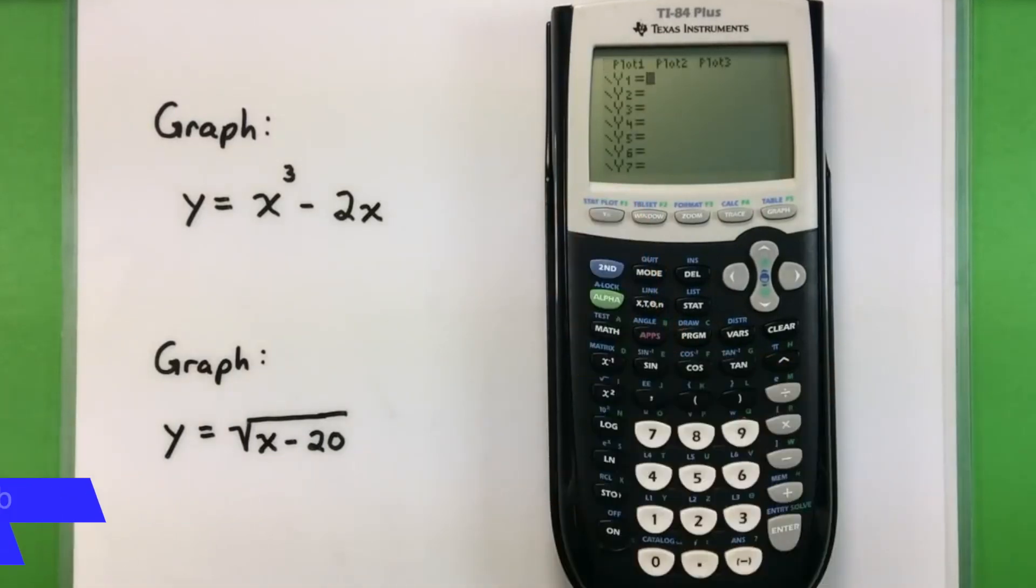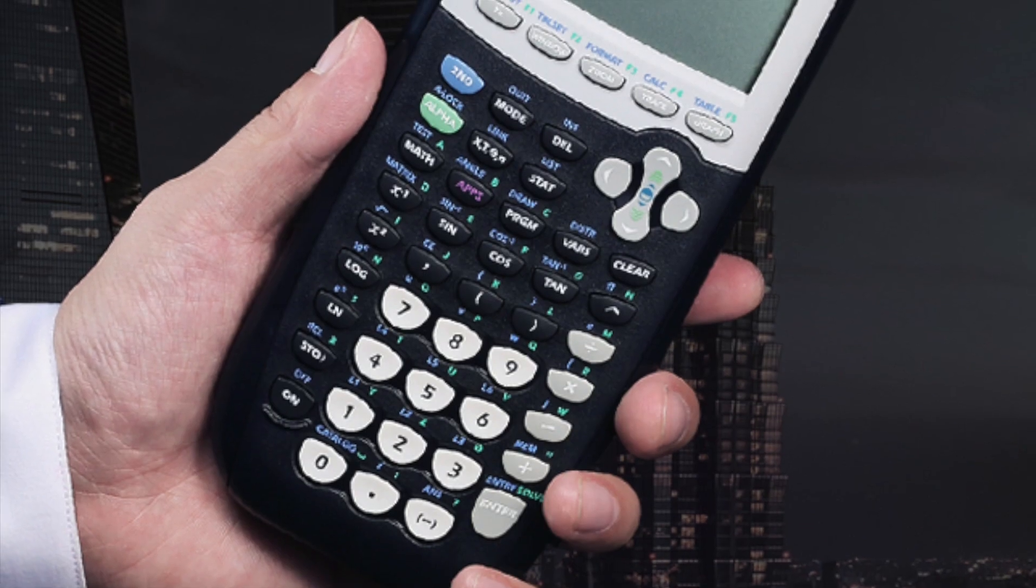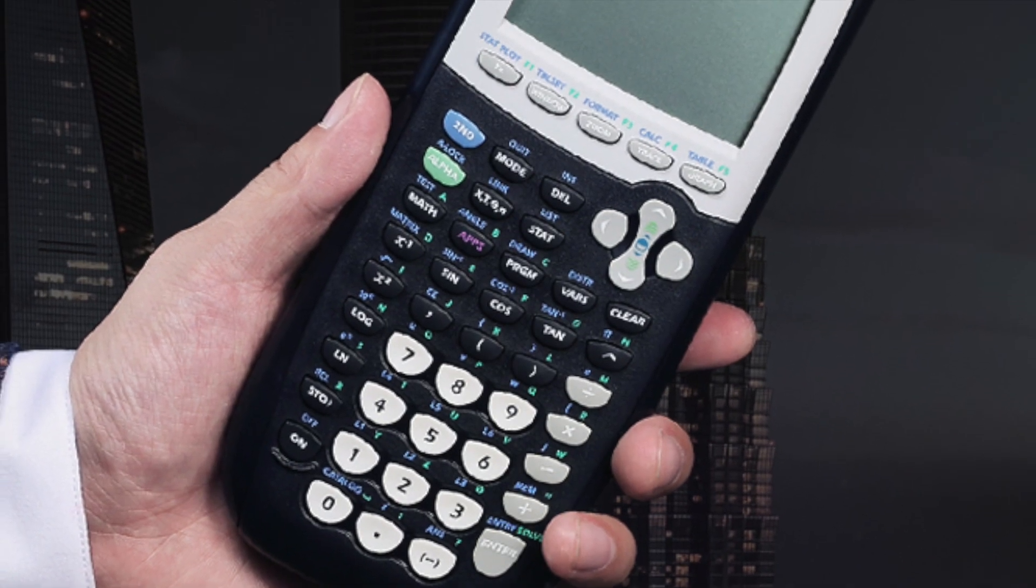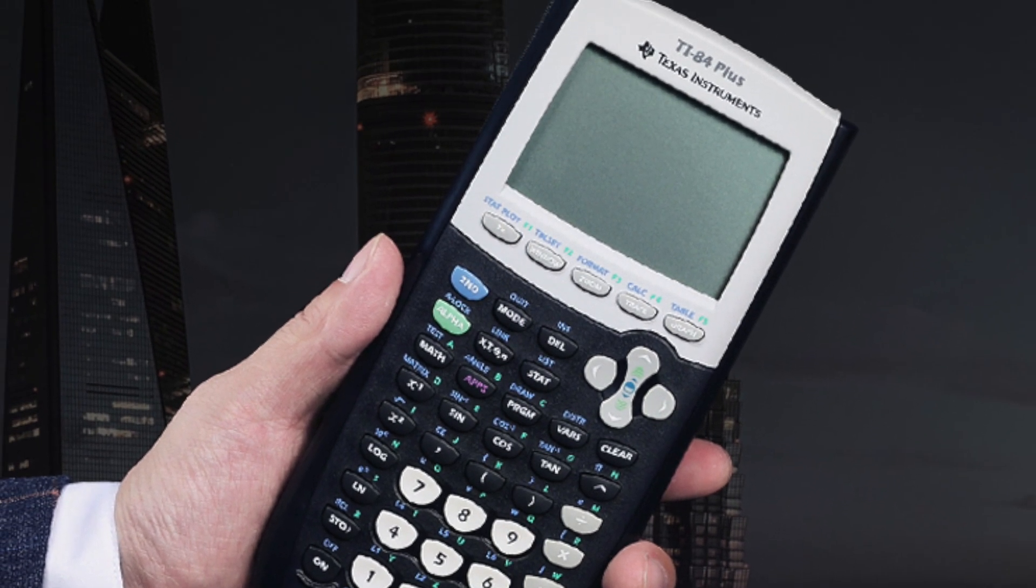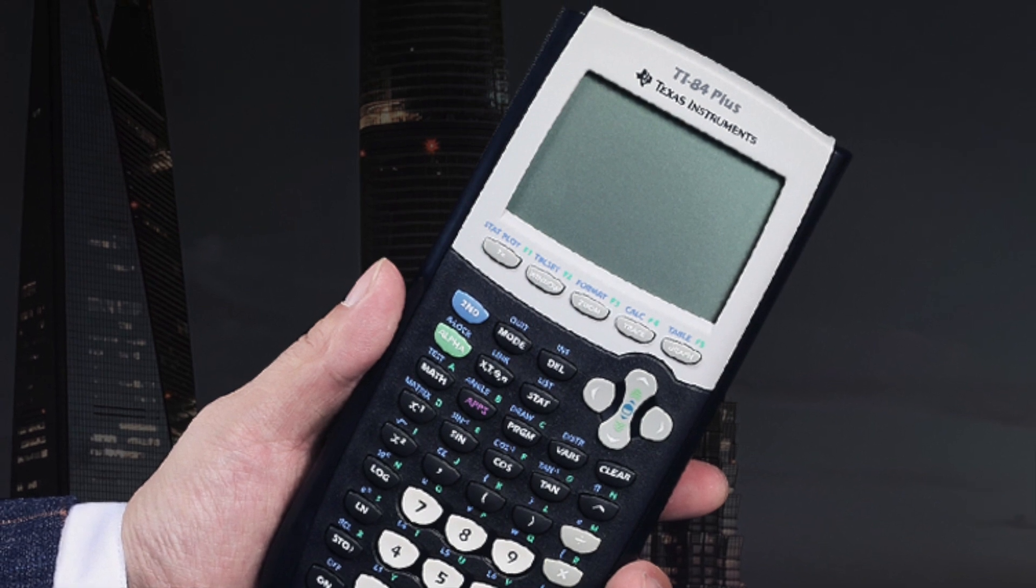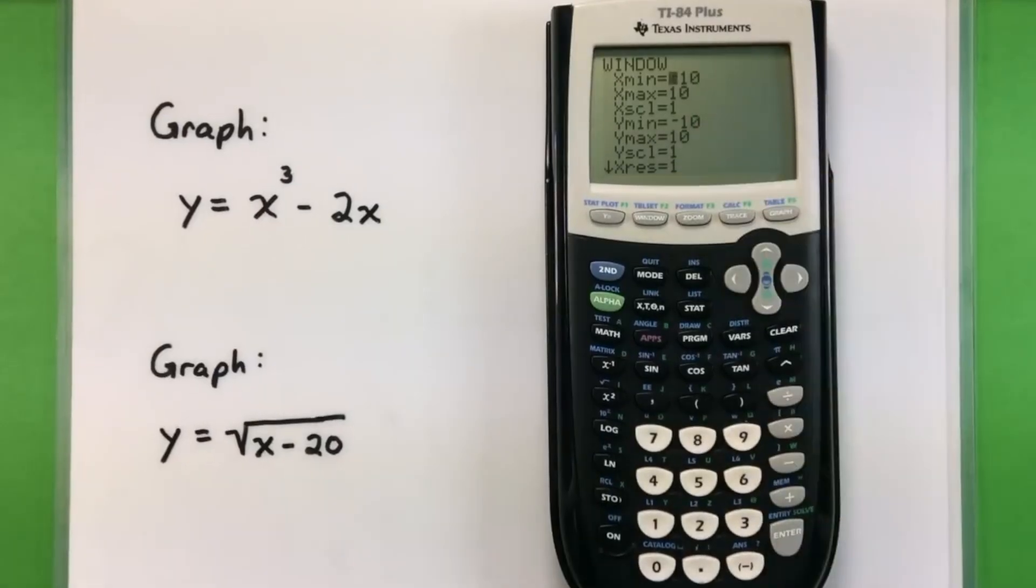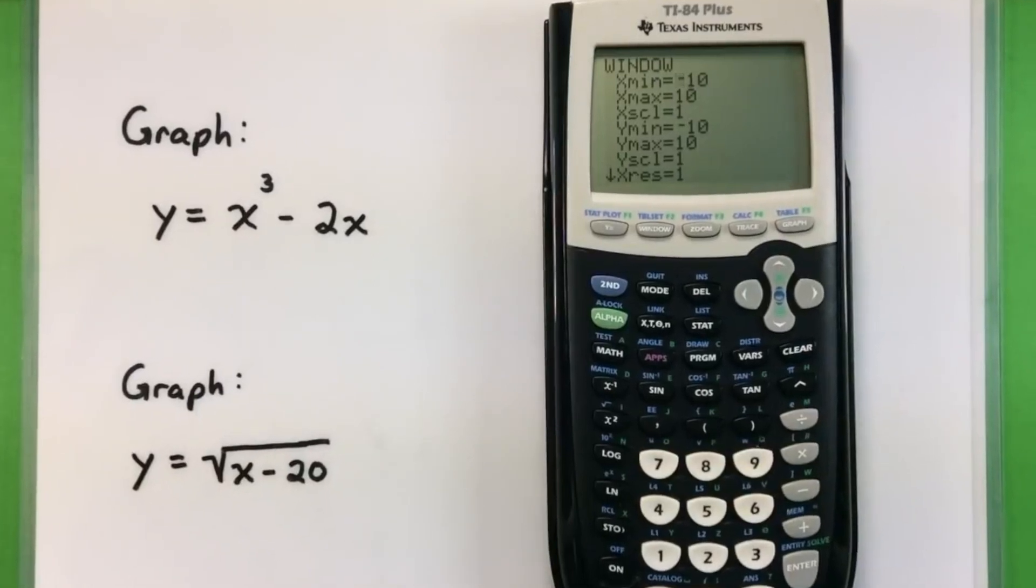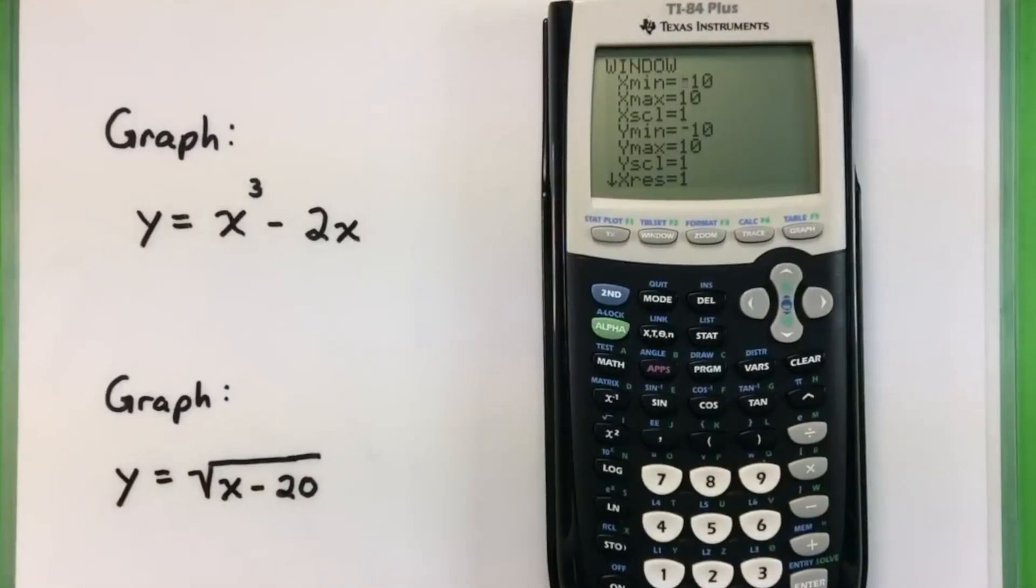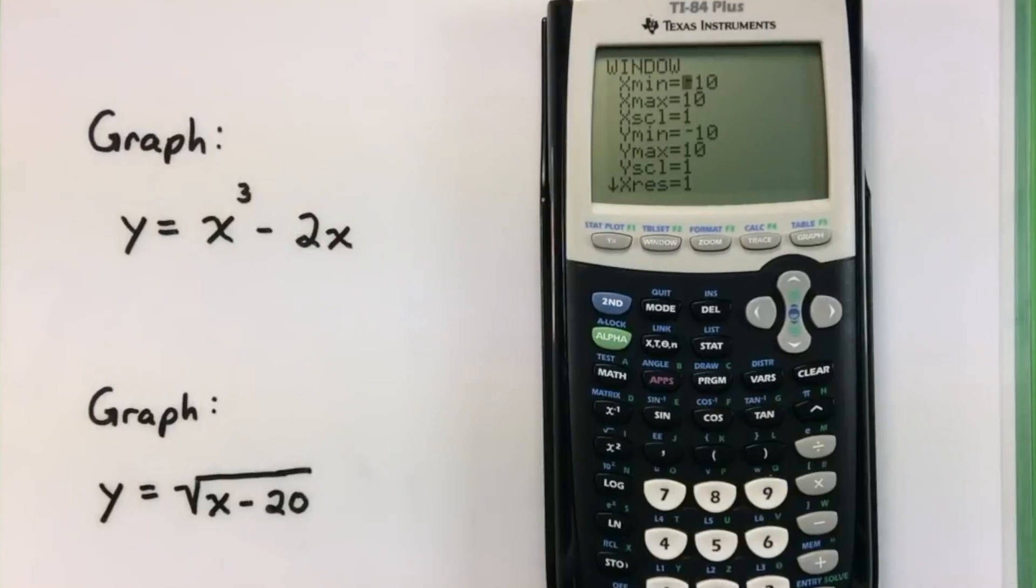The TI-84 Plus graphing calculator has been approved by standardized testing organizations for use on the PSAT, SAT, and ACT college entrance exams, as well as AP tests. It includes an IO port that can be used to communicate with other TI products. The calculator also uses four AAA batteries and includes a lithium battery backup that protects RAM memory.